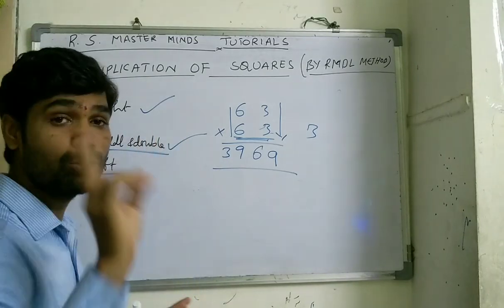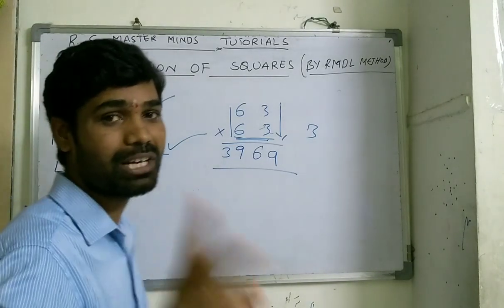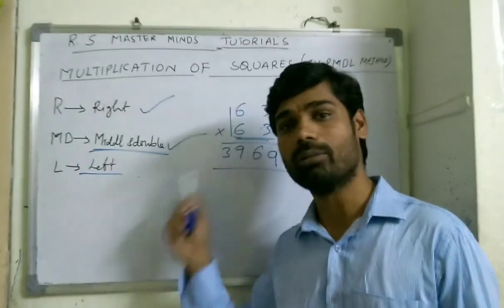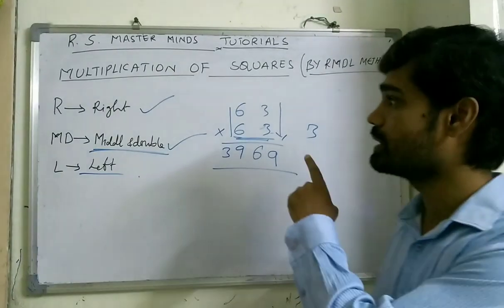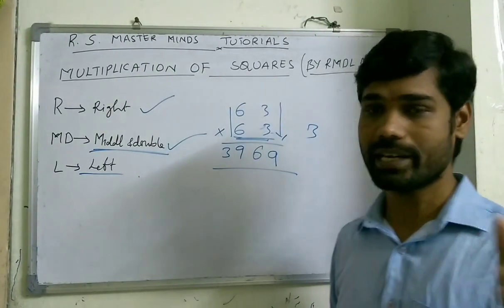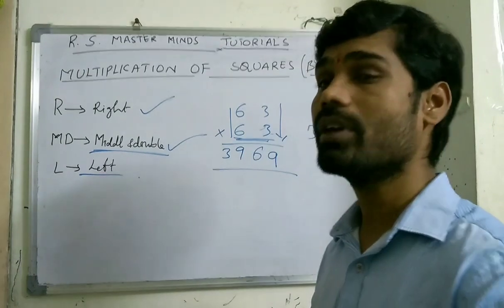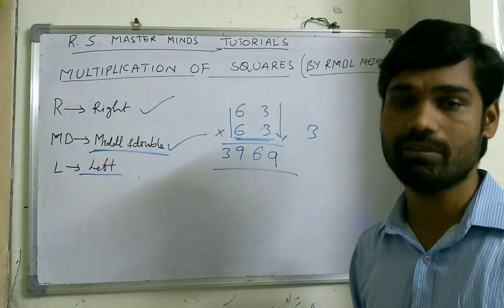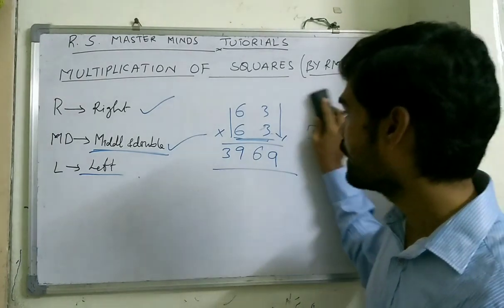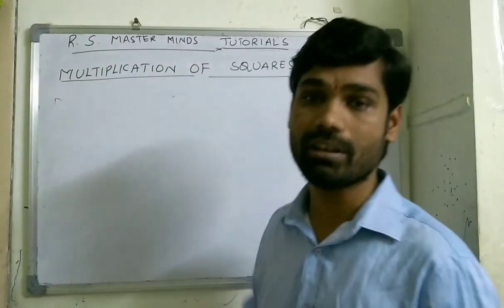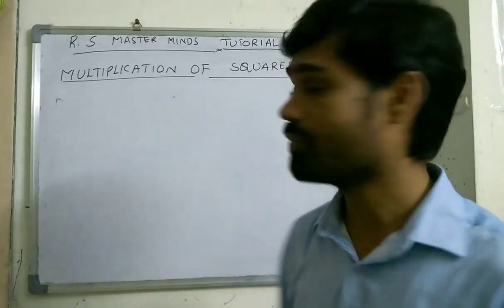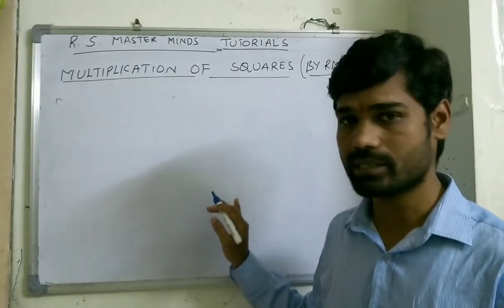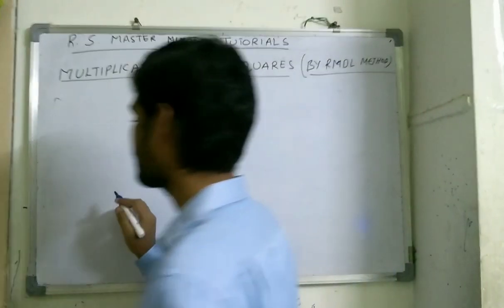This is the way to find squares in an easy way — within just 2 seconds. The method is: R for Right, MD for Middle and Double, and L for Left. Please follow this and you can solve any square easily. Also, please try to write out 1 to 50 squares for practice — that will help you understand very well.